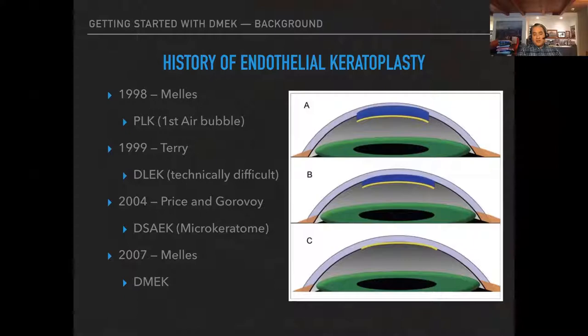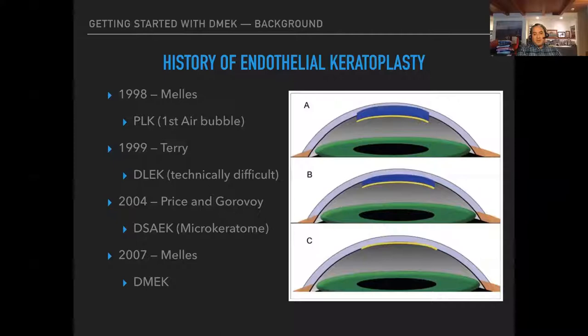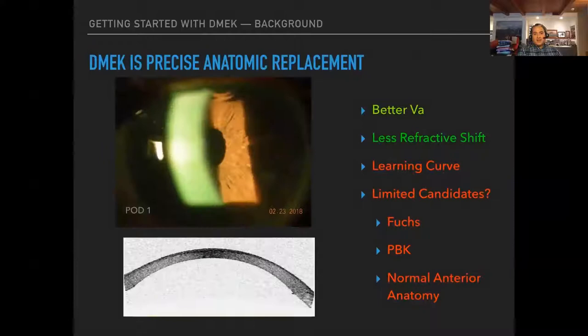In the history of endothelial keratoplasty: in 1998, Dr. Melles from the Netherlands showed that you could use an air bubble to stick endothelium onto a recipient cornea. In 1999, Mark Terry showed a technically difficult but visually good result with DLAEK, involving trepanation of the posterior stroma. It wasn't until 2004 when the microkeratome was used to prepare the DSAEK donor that we got widespread adoption. That was the gold standard until Dr. Melles showed you could do the same without the posterior stroma by doing DMEK.